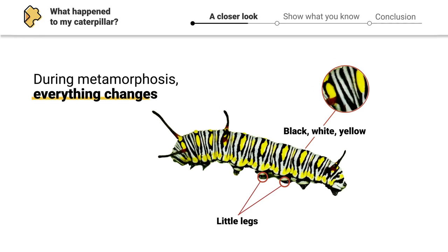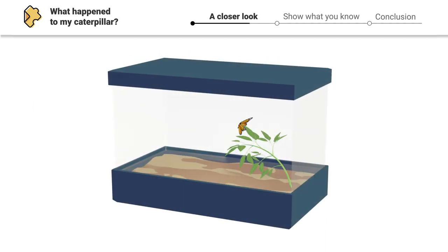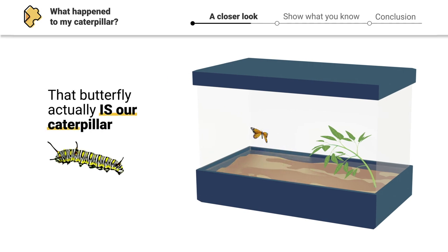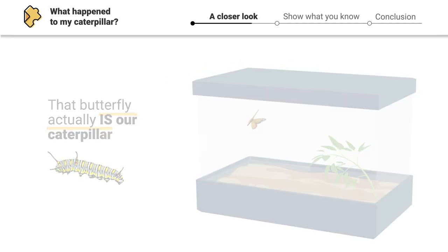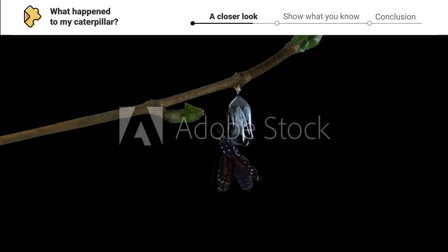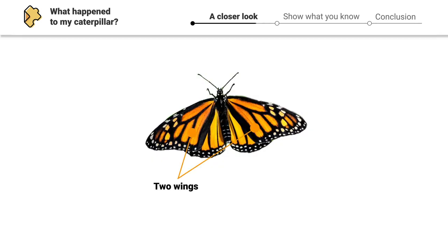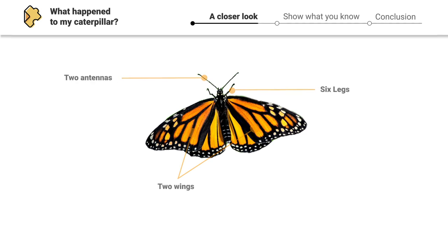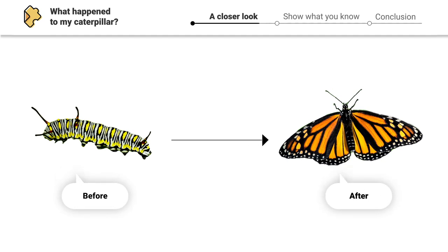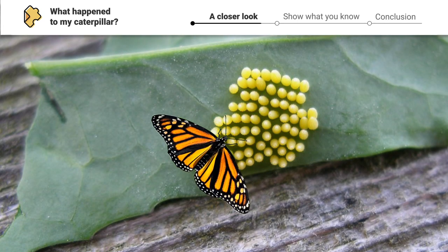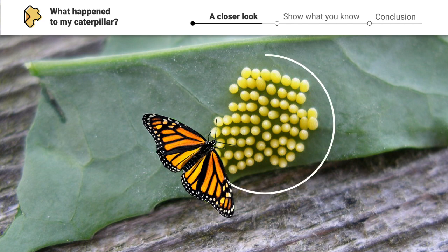But during metamorphosis, everything changes. Remember that butterfly we found in our cage? That butterfly actually is our caterpillar. While it was inside the chrysalis, the caterpillar goes through metamorphosis and transforms into a butterfly. Now it has two colorful wings, six legs, and two little antennas. But this butterfly is really just the adult form of a caterpillar. As an adult, this butterfly can grow and reproduce by laying eggs.